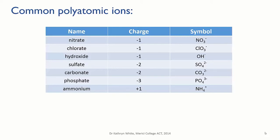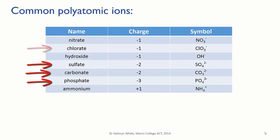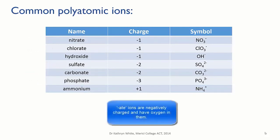Note that for some of the ions there's a pattern that can help. If the ion ends in -ate, like nitrate or chlorate or sulphate, it means that there's oxygen involved. So nitrate is nitrogen and oxygen, NO3 minus; chlorate is chlorine and oxygen, ClO3 minus.